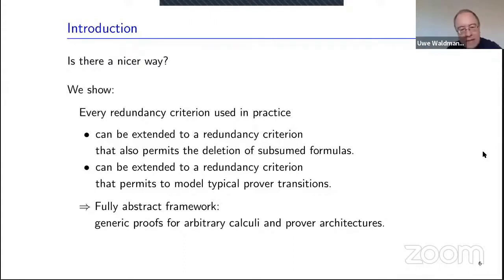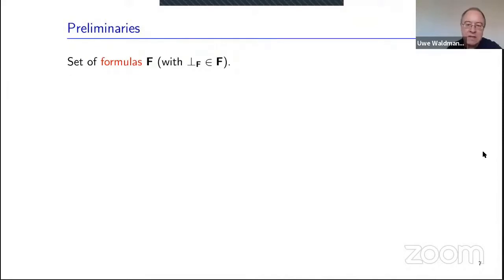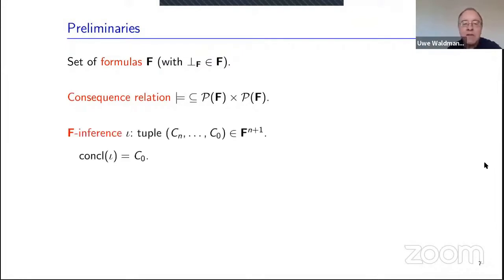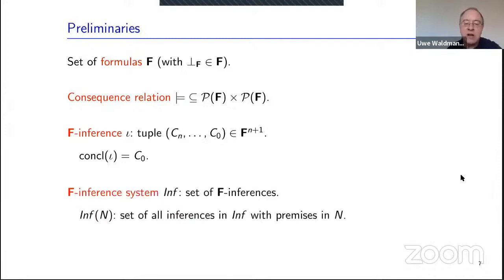We start completely abstractly with a set of formulas as abstract entities, assuming no structure beyond the existence of a false formula. We assume a consequence relation on formulas with the usual properties such as transitivity. F-inferences are tuples of formulas where the last element is the conclusion and the remaining components are the premises. An inference system is a set of such f-inferences, and we denote by Inf(N) all inferences whose premises are contained in N.